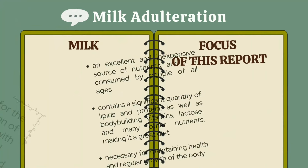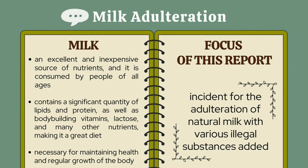It is frequent to hear or read news about food products being adulterated, and such goods are freely distributed and consumed by people, posing a variety of health risks. There were many cases related to food adulteration occurring globally, especially milk adulteration. Milk is an excellent and inexpensive source of nutrients, consumed by people of all ages. It contains significant quantities of lipids and protein, as well as vitamins, lactose, and many other nutrients, making it a great diet especially for newborns.